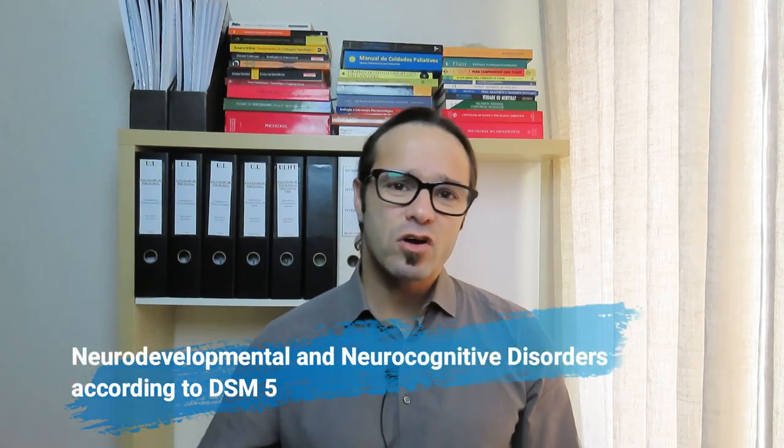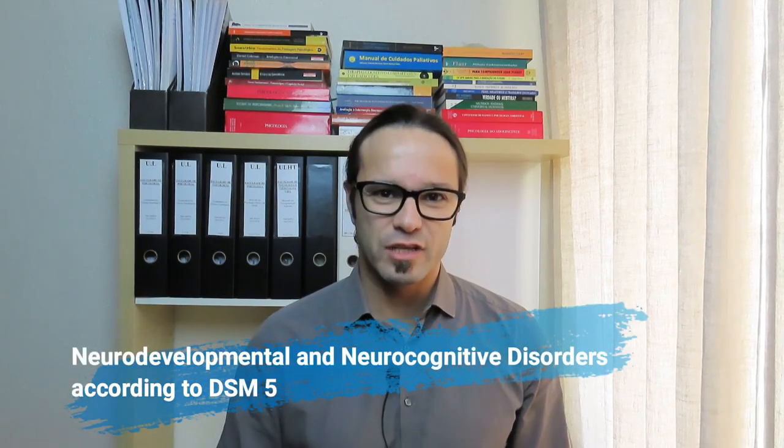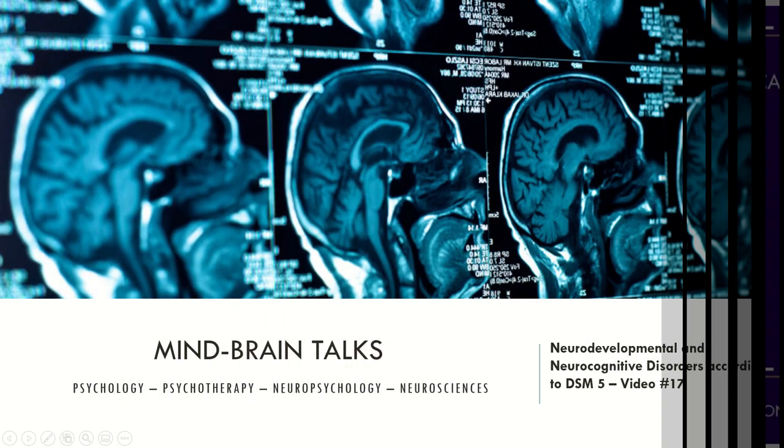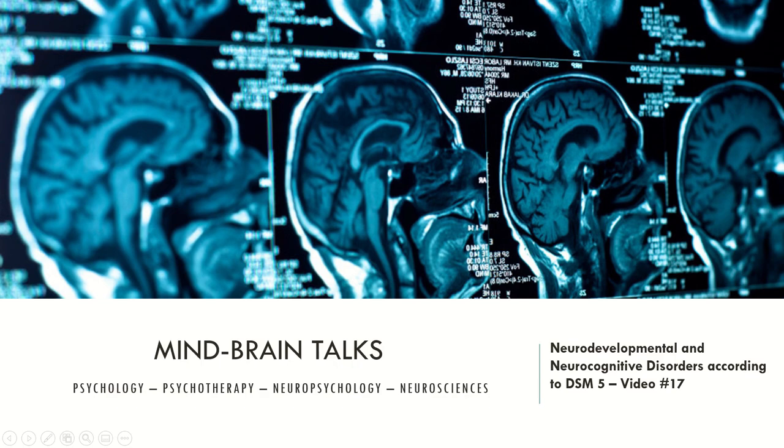Today's video is focused on neurodevelopmental and neurocognitive disorders according to the DSM-5. If you're curious about how the DSM-5 rearranged these two categories, this is the video for you. This is just a brief descriptive video, therefore I will not detail specific criteria for each disorder. But in the future, I will make different videos where I look specifically at diagnostic criteria of each disorder. So now let's see how the DSM-5 rearranged these two clusters of neurodevelopmental and neurocognitive disorders.